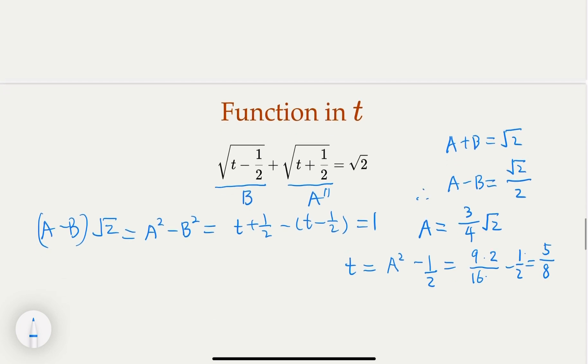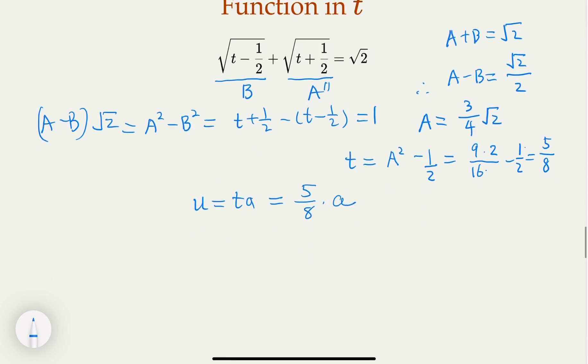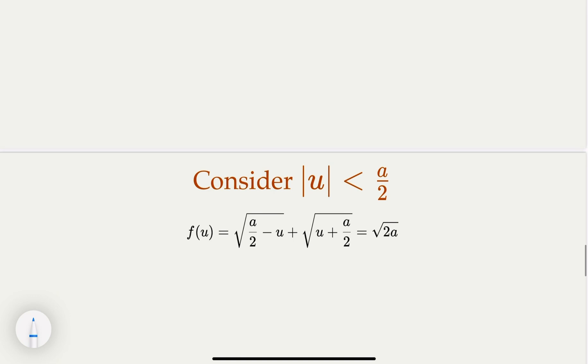So since we know u equal t times a, right? So what is u? u equal ta. Here, here would be 5/8 times a. Alright, that's good. So here, another case is what if u actually is smaller than this, right? So here, I'm going to skip the steps. You can conclude that u has to be 0 in this case, which happens the root we already know.